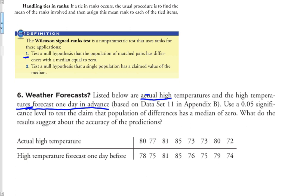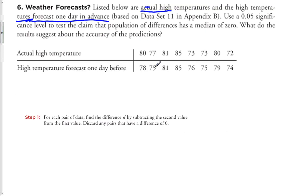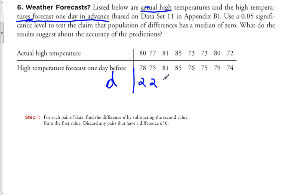Let's take a look at our paired data. We have the actual high temperatures in the top row and the forecast high temperatures in the bottom row. Step one: for each pair of data, find the difference D by subtracting the second value from the first value. Discard any pairs that have a difference of zero. The first pair, 80 and 78, have a difference of two. The second pair, 77 and 75, also have a difference of two. The third pair, 81 and 81, have a difference of zero. And 85 and 85 also has a difference of zero.